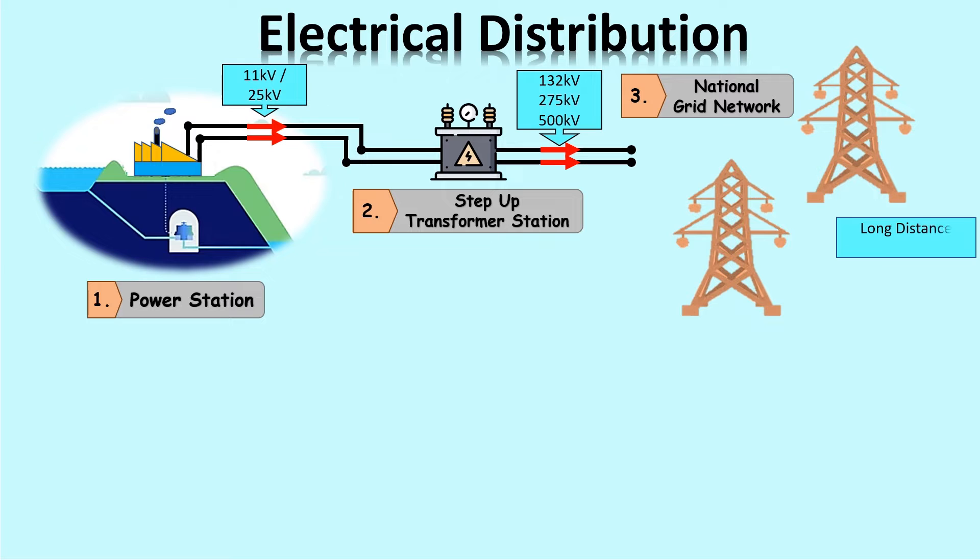Next, this electric energy will pass through the national grid network. This national grid network is a long-distance transmission. The voltage that has been increased earlier will be able to pass through this line with a small loss rate.